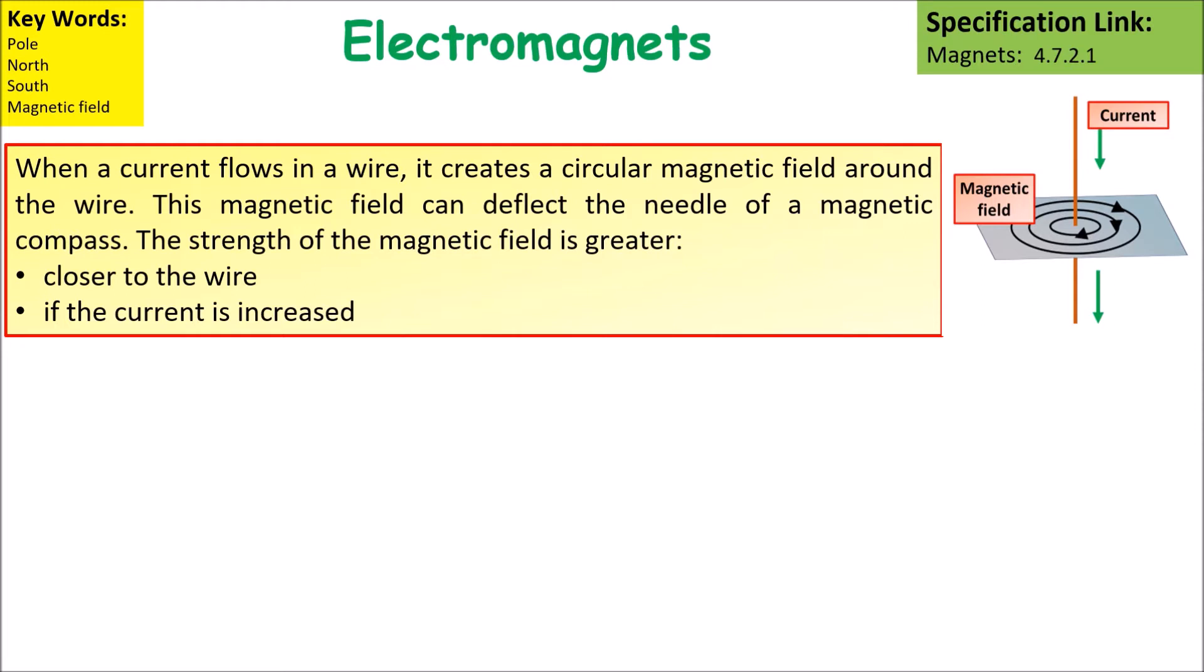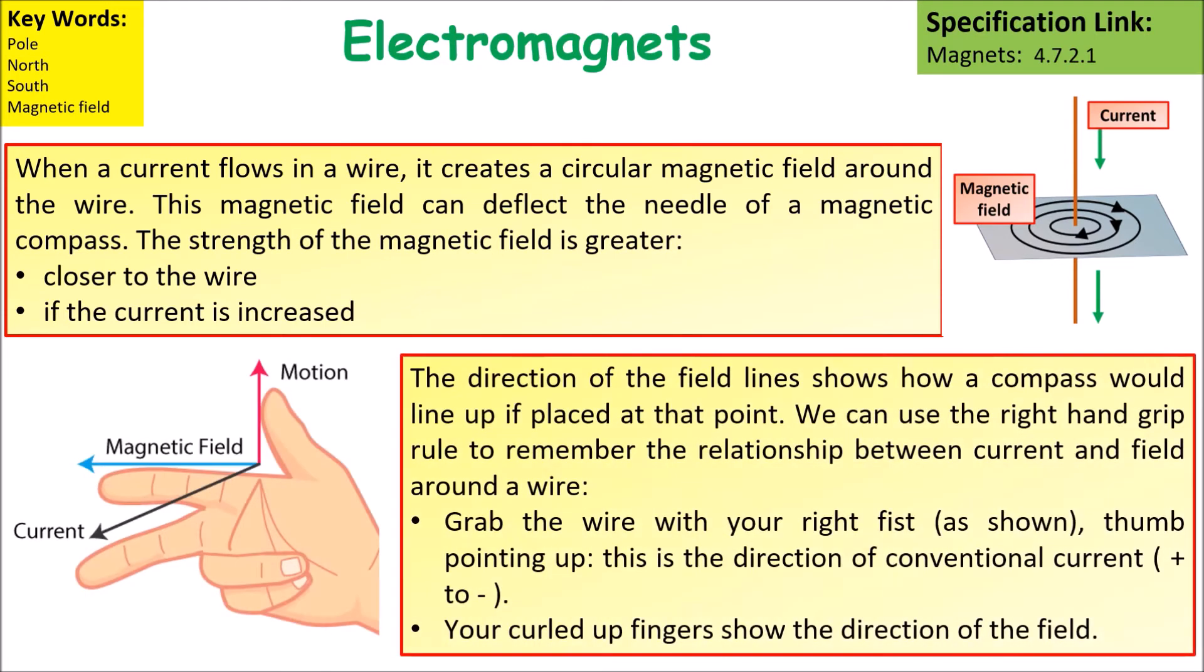The strength of the magnetic field is greater the closer to the wire you get and if you increase the current. The direction of the field lines shows how a compass would line up if you place it at that point.